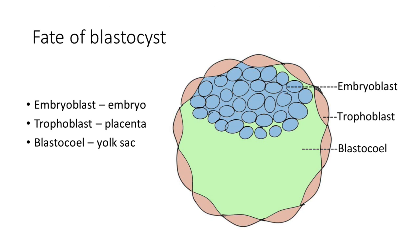Coming to the fate of blastocyst: the inner mass of cells, that is embryoblast, gives rise to the actual embryo. The outer layer trophoblast takes part in the formation of the supporting structure, that is the placenta. And the blastocyst cavity forms the yolk sac. How all this happens we will see in detail, but that will be in our next episode, that is season one episode three.